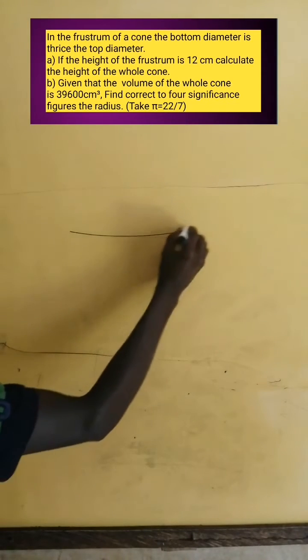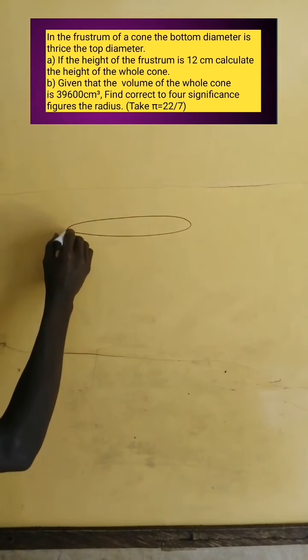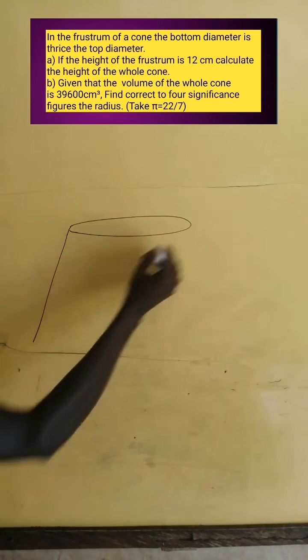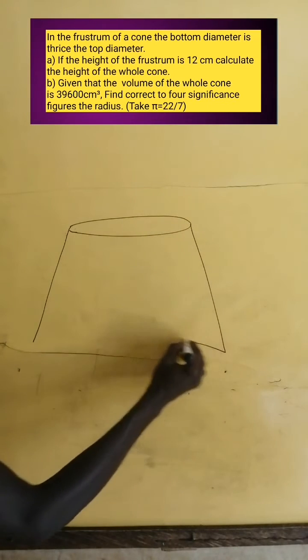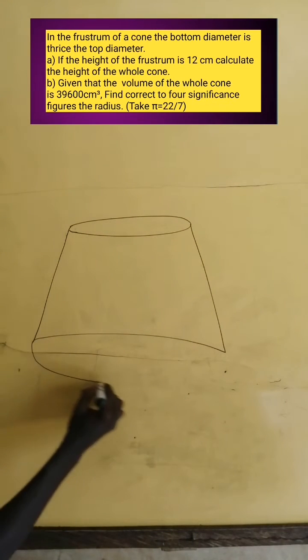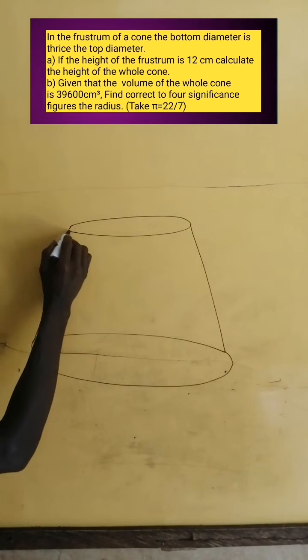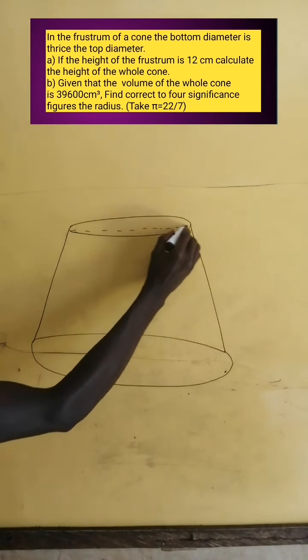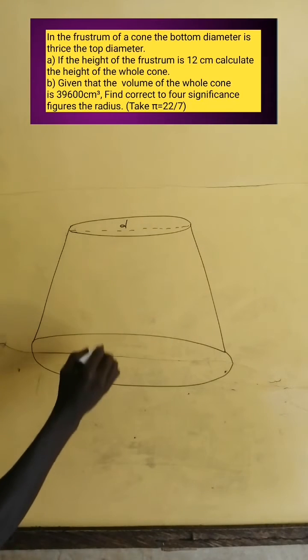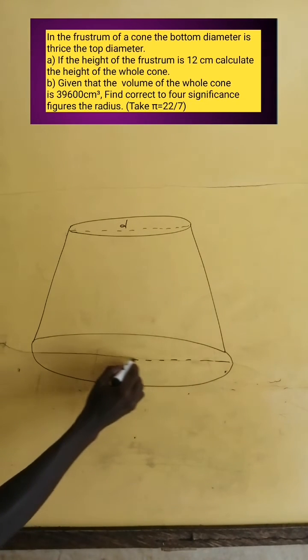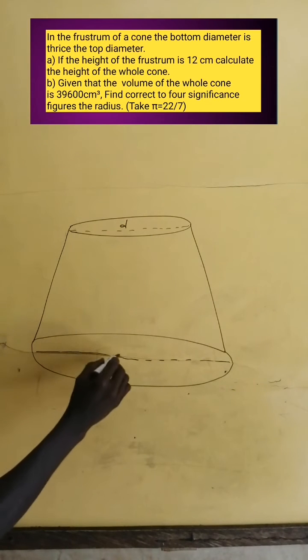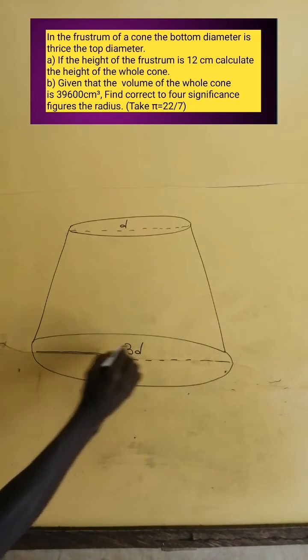A frustum of a cone is simply a cone with the upper part being cut out, like what I'm drawing. I don't know how to draw, so just consider this for me. Let's have this as the frustum of a cone. This is the top diameter, and it is D. And this is the bottom diameter, so let's write 3D. That is thrice D.